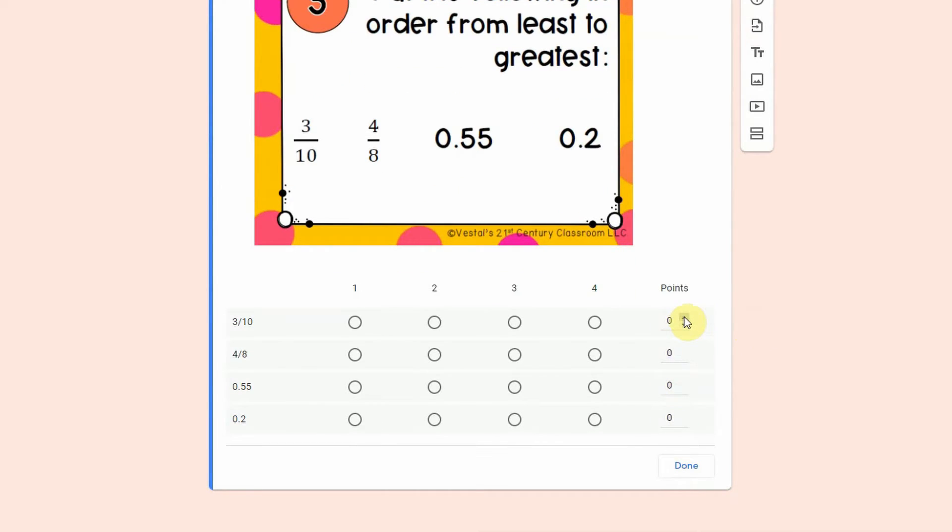And then for the answer key you can decide how many points each row is worth. So I would go ahead and make each row worth a point and then basically students are going to put these in order from least to greatest.